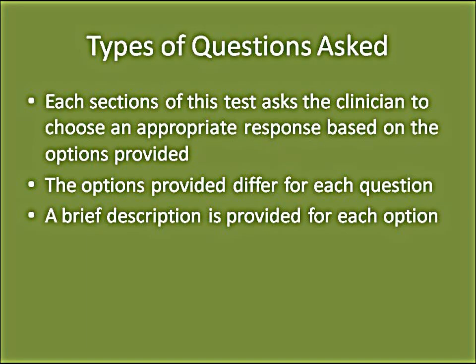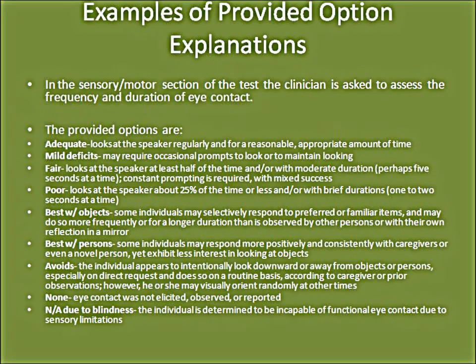Each section of this test asks the clinician to choose an appropriate response based on the options provided. The options differ for each question, and a brief description is provided for each option. For example, in the sensory motor section, the clinician assesses the frequency and duration of eye contact. The provided options are adequate, mild deficits, fair, poor, best with objects, best with persons, avoids, none, and non-applicable due to blindness. Following each option is a brief example — for instance, 'adequate' means the client looks at the speaker regularly and for a reasonable, appropriate amount of time.